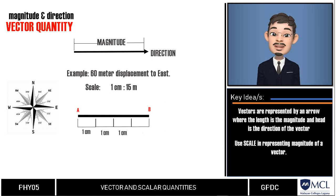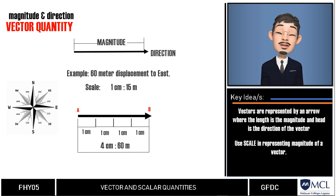Notice that in our example, from point A to point B, we are heading east. So, the head of our vector representation is towards east too.